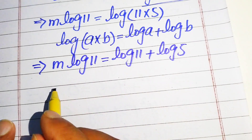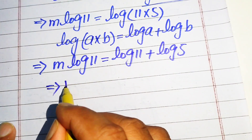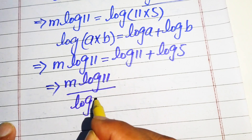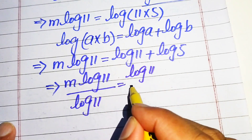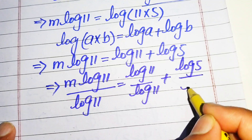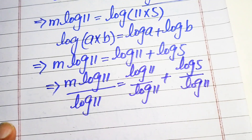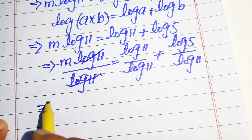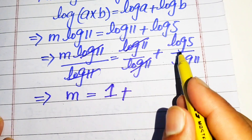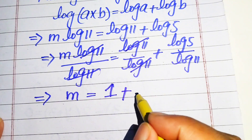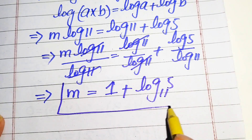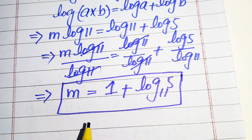Here we divide both sides by log 11. Log 11 divided by log 11 cancels out, giving m equals 1 plus log 5 divided by log 11. Using the change-of-base property, we write this as m equals 1 plus log base 11 of 5. So this is the value of m we get from the given equation.